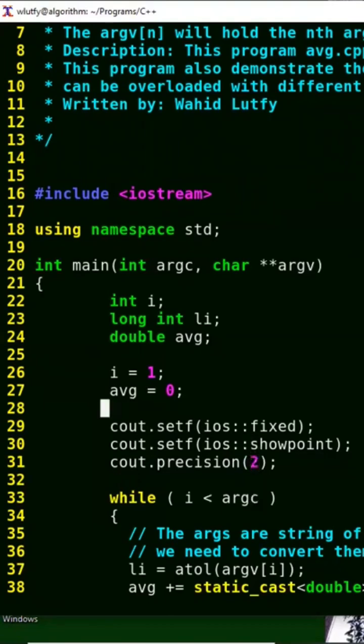And then I'm including iostream here and using namespace std so I don't have to put std in front of cout or endl, because at line 18 I put using namespace std.